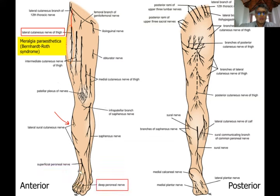The deep peroneal nerve is the nerve of the anterior compartment of the leg. Just like the superficial peroneal nerve, after supplying the anterior compartment muscles and the muscles of the dorsum of the foot, it has a small cutaneous component.